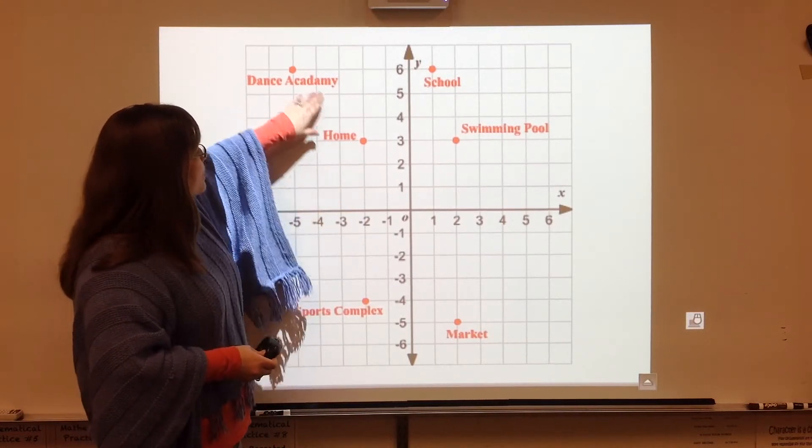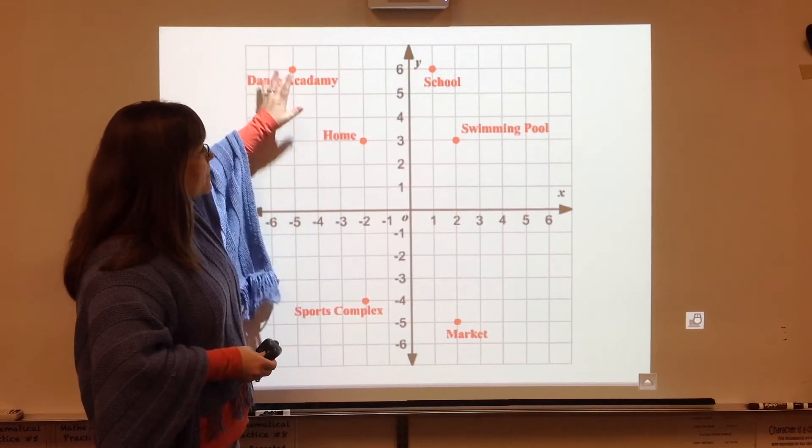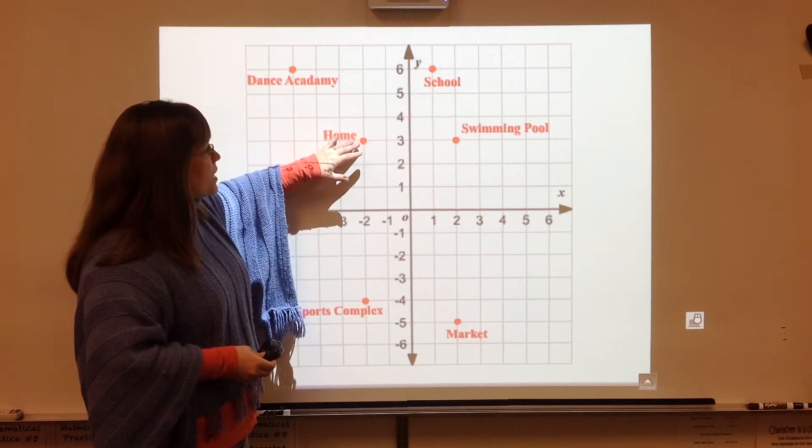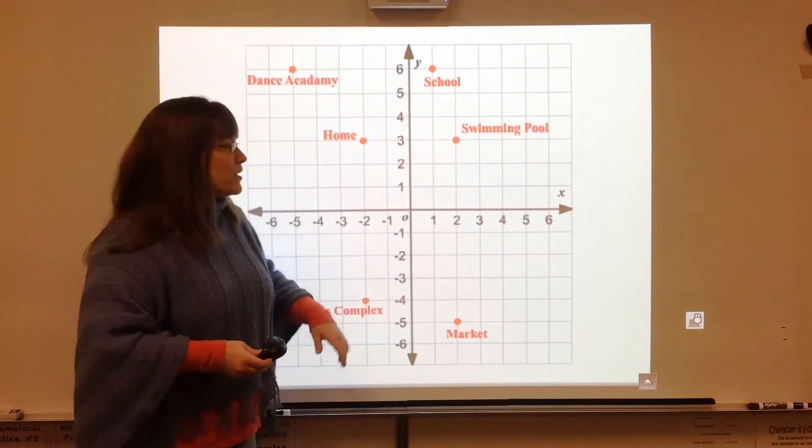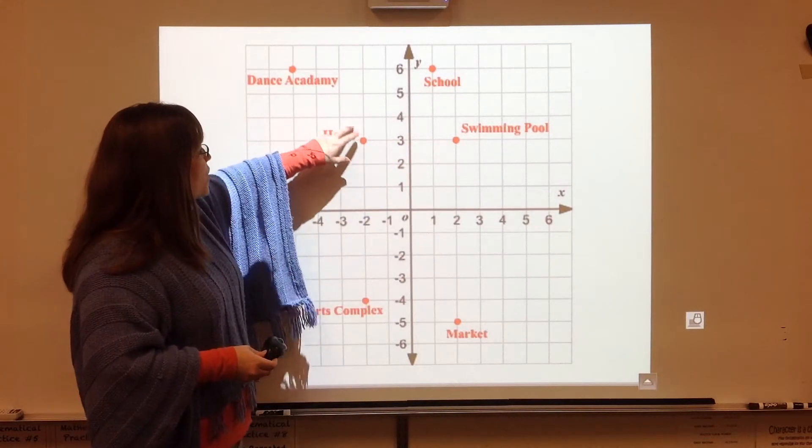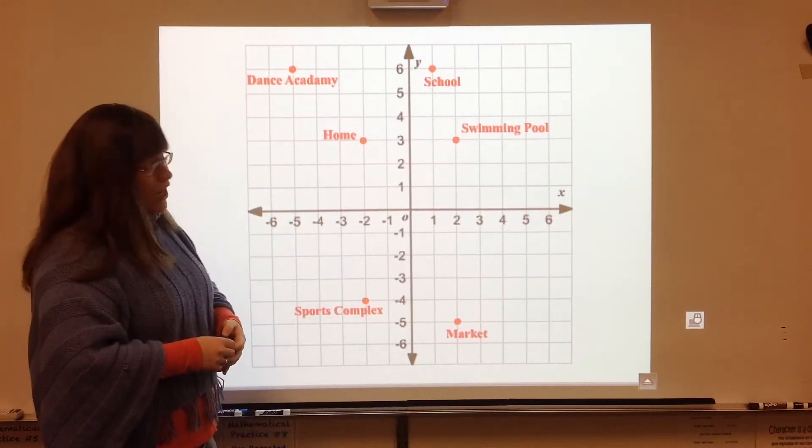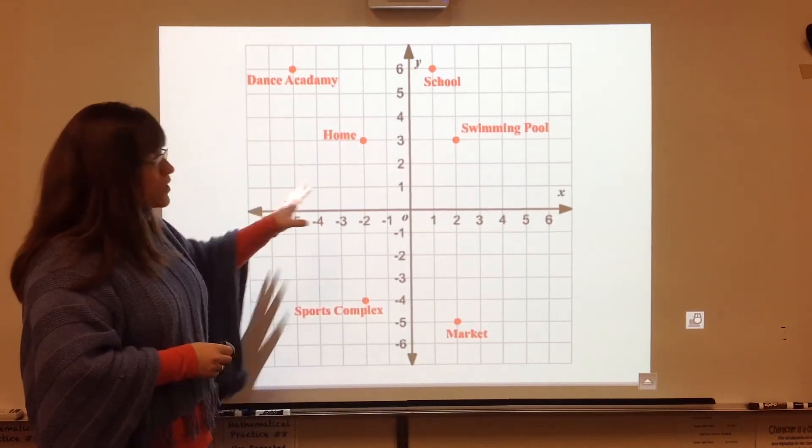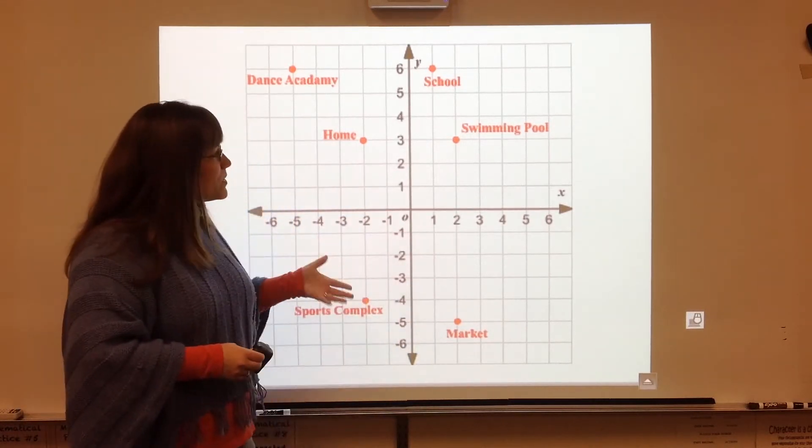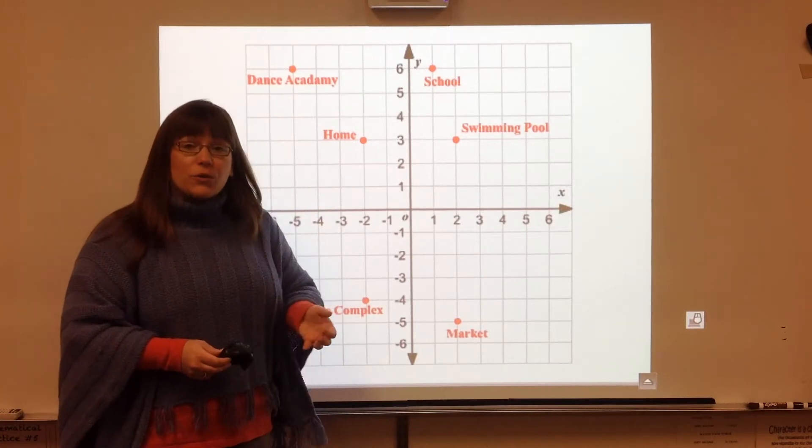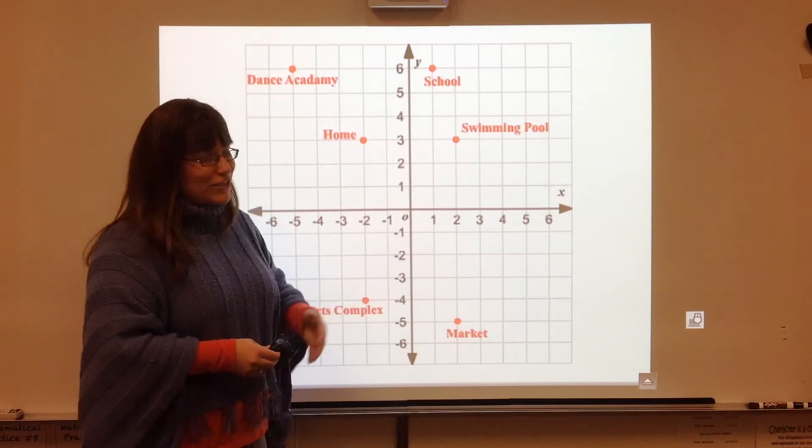Notice we're not going to be going from like the home to the dance academy with a straight line. We're going to be traveling on the streets, so to speak. So we can't just cut across diagonally. And that is something that's on your notes as well. So we're going to come back to this at the end and actually solve some distance problems, but to give you some context of what those points on a graph could represent places that you would be traveling to.